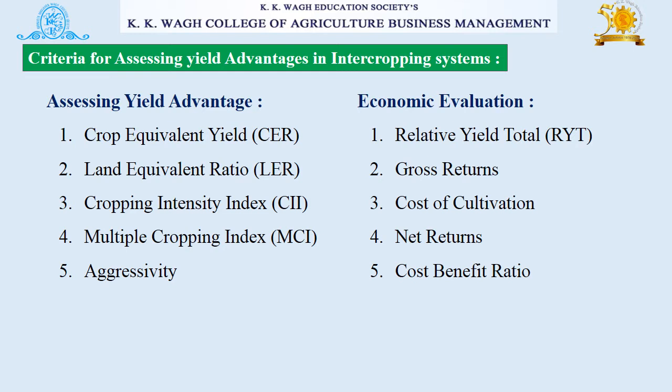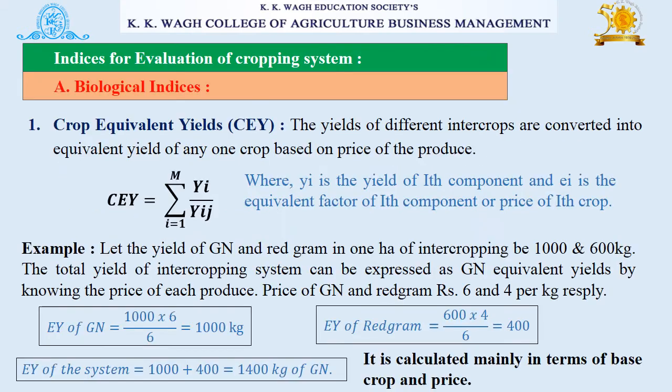Under economic evaluation, the criteria are: relative yield total, gross returns, cost of cultivation, net returns, and finally cost-benefit ratio. Let's see these one by one.